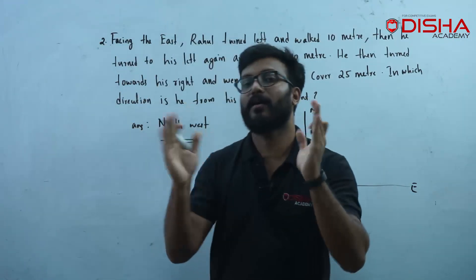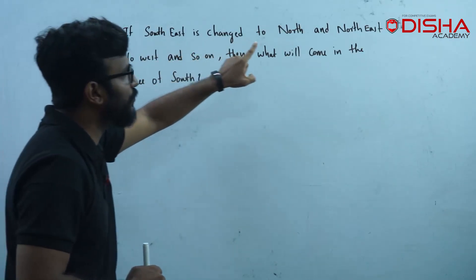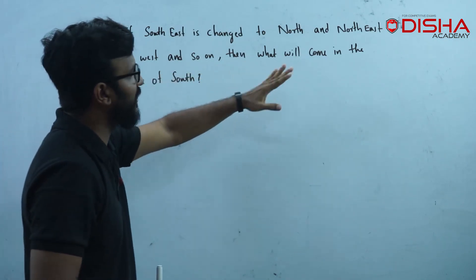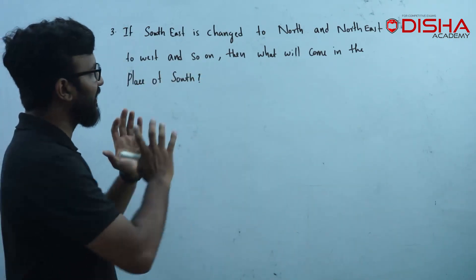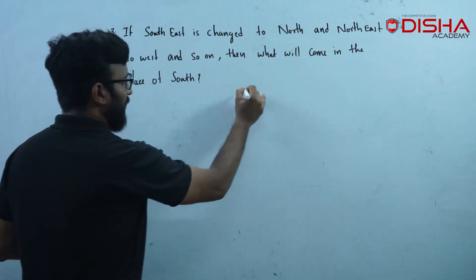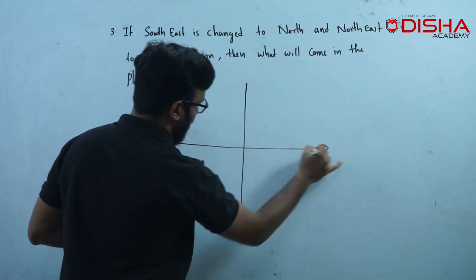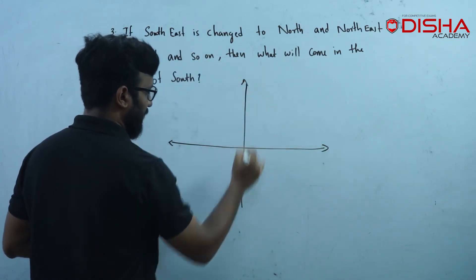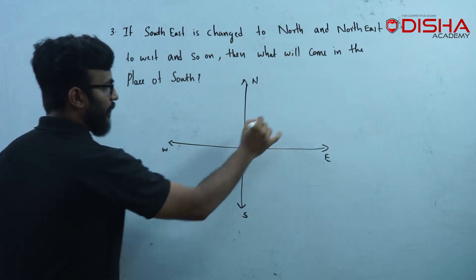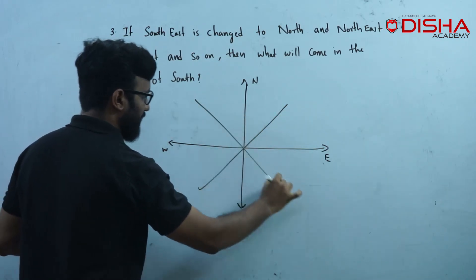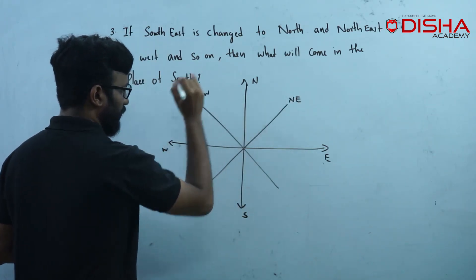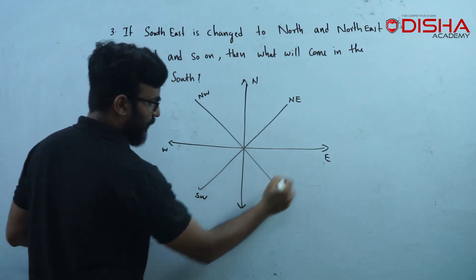Let's go to the third question. If Southeast is changed to North, and Northeast to West, and so on, then what will come in the place of South? I will give you directions. Mark VNS. The four directions: North and East, North to West. North and West are Northwest; South and East to Southeast.